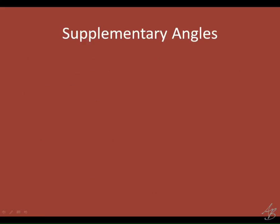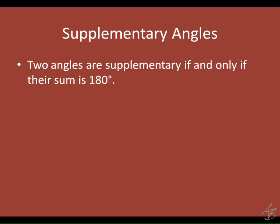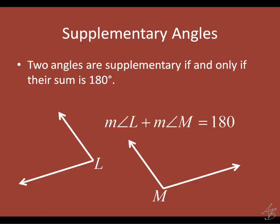Next: supplementary angles. Two angles are supplementary if and only if their sum is 180. A common wrong way to say this is that the angles are 180 — but the angles themselves are not 180. When we add them together, they add up to 180. We write it as the measure of angle L plus the measure of angle M equals 180. The angles don't have to be adjacent, but they could be. There's no way to mark supplementary in a picture — you'd have to state it separately.